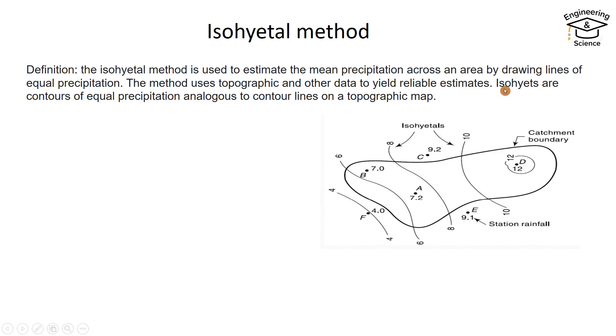Isohyetals are contours of equal precipitation, analogous to contour lines on a topographic map. As you see, it is similar to a topographic map.